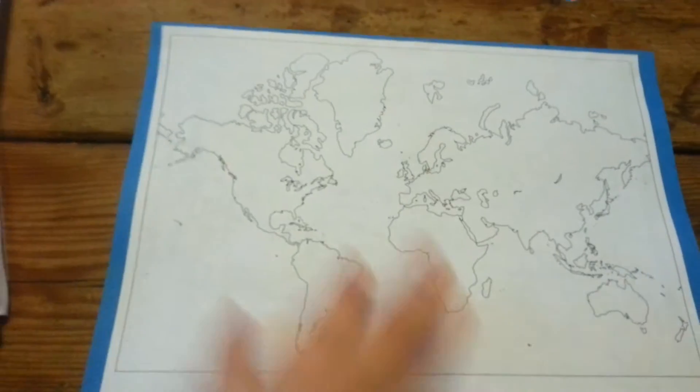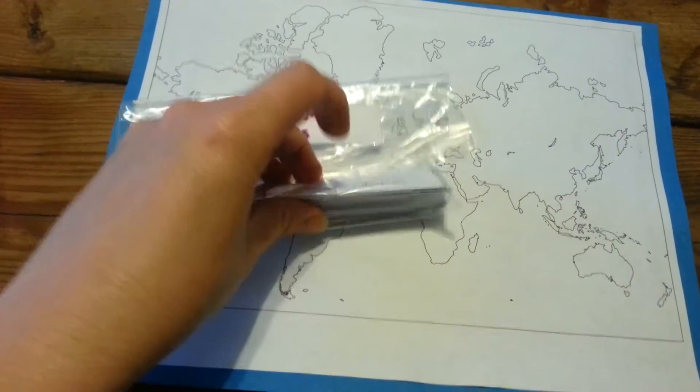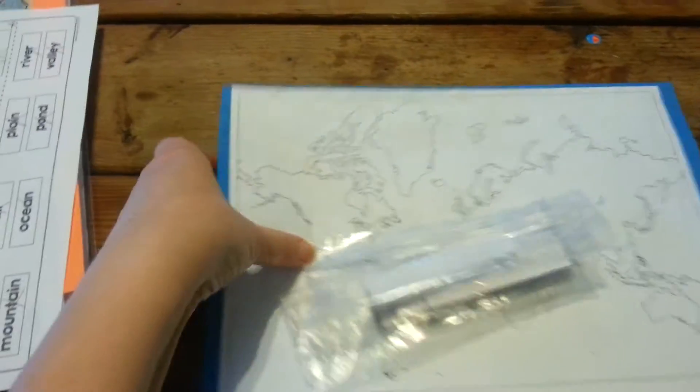And then he also played this file folder game that I just printed the map of. And he just used pretty much the cards of the oceans and the continents and things like that and just had to put them where they belonged. So that is what he did for history.